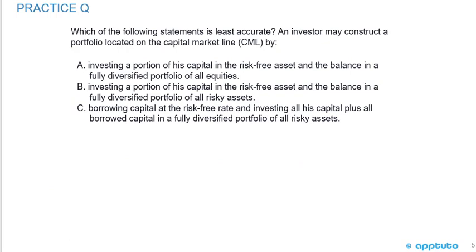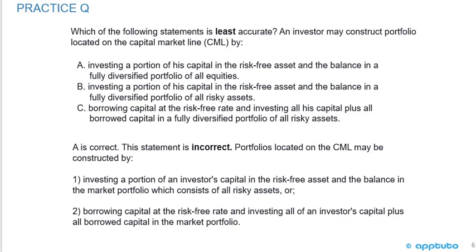Which of the following statements is least accurate? An investor may construct a portfolio on the capital market line by: A) investing a portion in the risk-free asset and the balance in a fully diversified portfolio of all equities, B) investing a portion in the risk-free asset and the balance in a fully diversified portfolio of all risky assets, or C) borrowing at the risk-free rate and investing all capital plus borrowed capital in a fully diversified portfolio of all risky assets. The correct answer is A — it is incorrect because the market portfolio consists of all risky assets, not just equities.